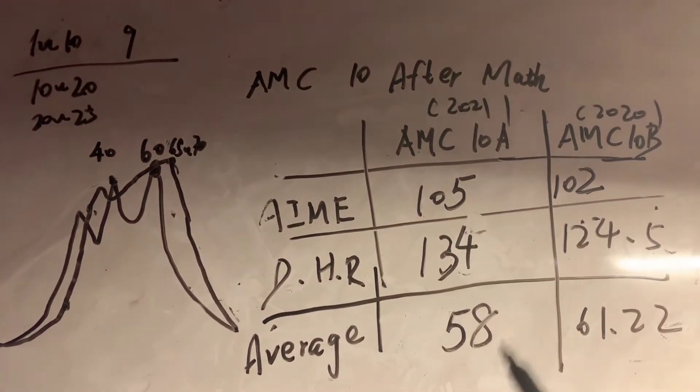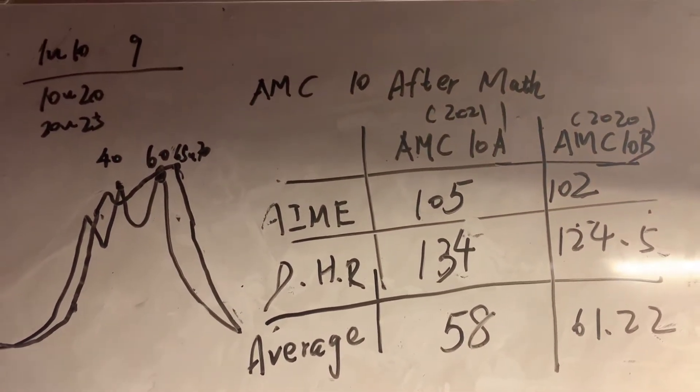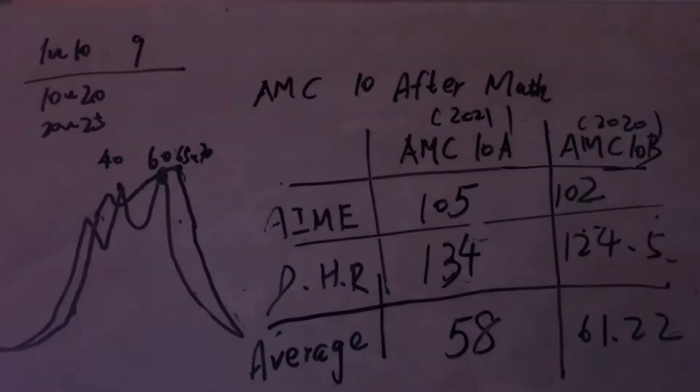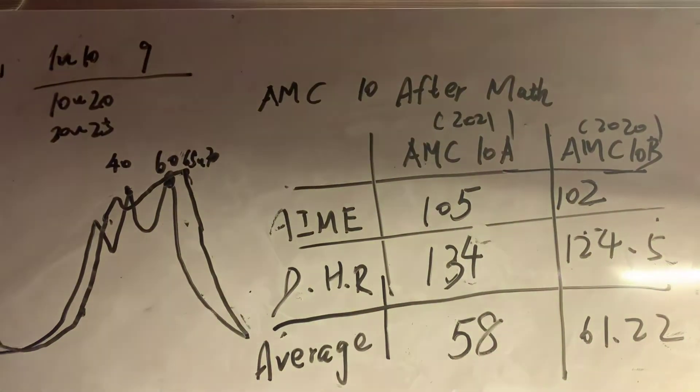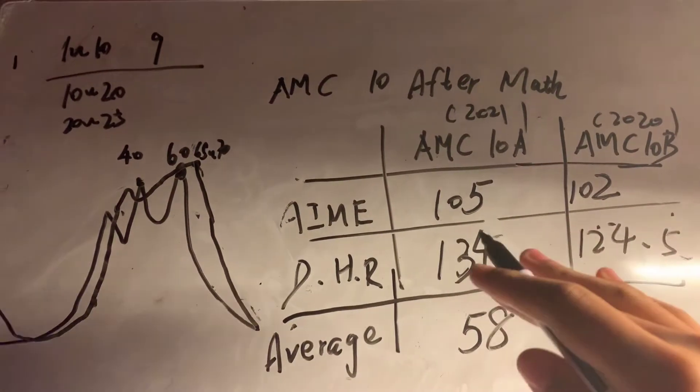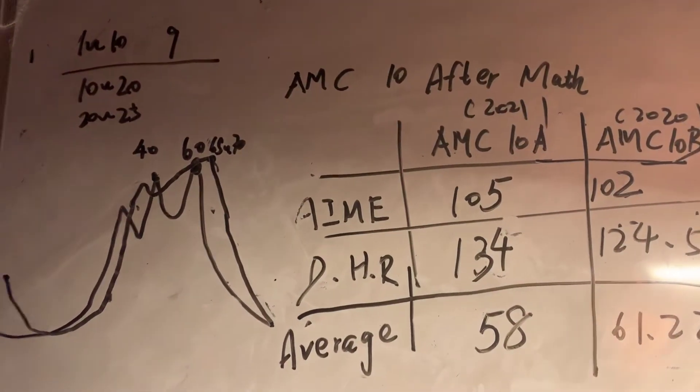This is the estimated score which the average should be lower and the AIME and DHR should be a bit higher. DHR should be much higher, I think. So, let's now give our explanation.